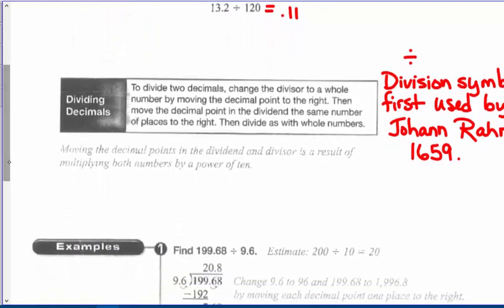When we divide decimals, you change the divisor to a whole number by moving the decimal point to the right, then move the decimal point in the dividend the same number of places to the right. The division symbol was first used by Johann Rahn in 1659.